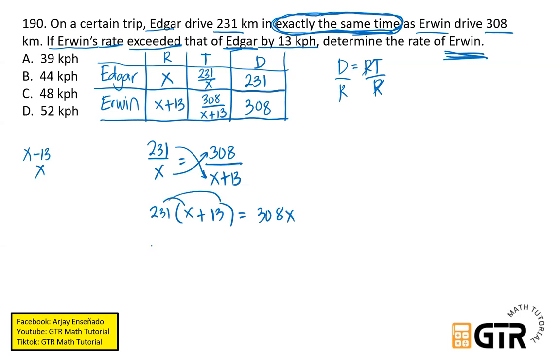So simplify lang natin ito. So distribute 231x plus 231 times 13. 231 times 13, so that is equal to 3,003. So 3,003 equals 308x. Then subtract 231x to both sides. So therefore, we have 3,003 equals, pag sinubtract natin ito, 8 minus 1, so we have 7. 10 minus 3, that is 7. So 77x.